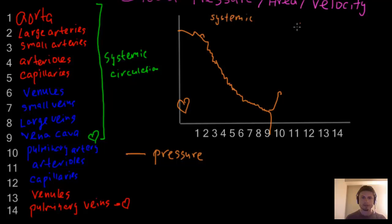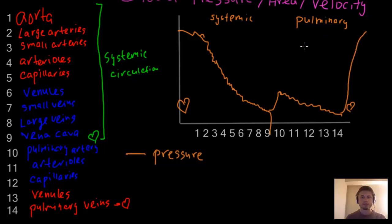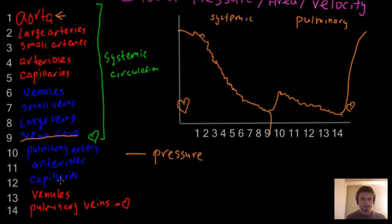In pulmonary circulation the pressure rises again but doesn't go as high as in systemic circulation. It then keeps dropping again before going back into the heart. So to summarize: pressure is lowest inside the vena cava, and highest inside the heart. If the question asks about outside the heart, it's highest inside the aorta. Pressure in the pulmonary artery doesn't rise as high as in the aorta.